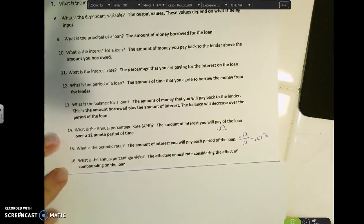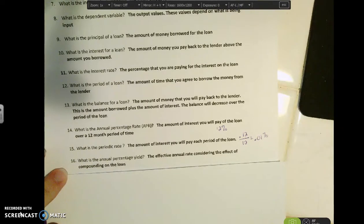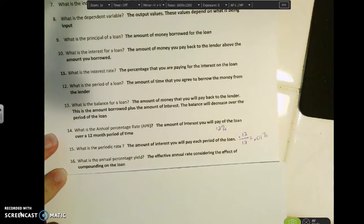The annual percentage yield is something a little bit harder to completely understand. But this is the effective annual rate considering the effect of compounding on the loan. So this would be particularly true for credit cards. So with a credit card, as you let your balance hold over a different month, that means the amount of interest that you pay each month will increase. So the effective annual yield is basically considering what's happening when you compound on that loan.